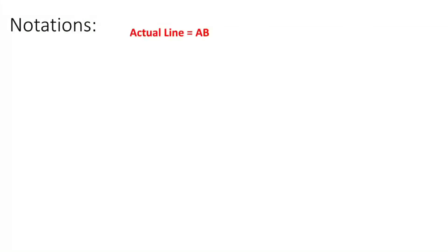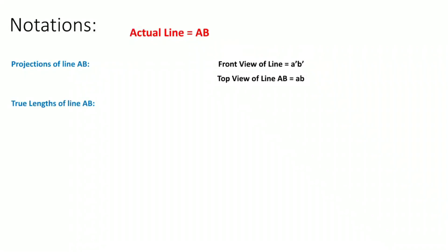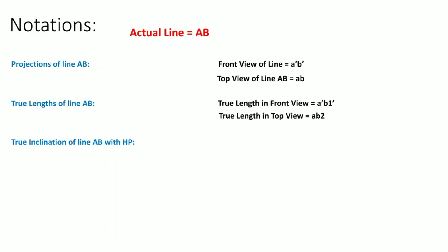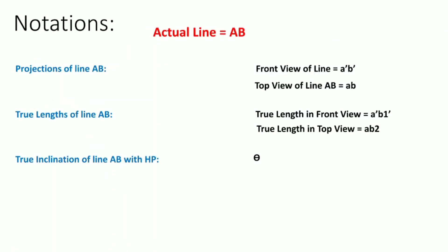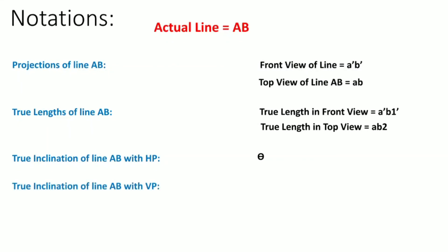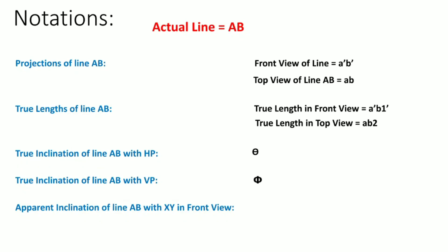The actual line is AB. The projections of line AB are the front view line A'B' and the top view line AB. The two lengths obtained — A'B1' in front view and AB2 in top view — are the true lengths. The true inclination of line AB with the horizontal plane is angle theta, which is also the angle made by the true length with the XY line in front view. The true inclination of line AB with the vertical plane is angle phi. The apparent inclination of line AB with the XY line in front view is angle alpha — the line A'B' makes angle alpha with the XY line. Similarly, in top view the line AB makes angle beta with the XY line.